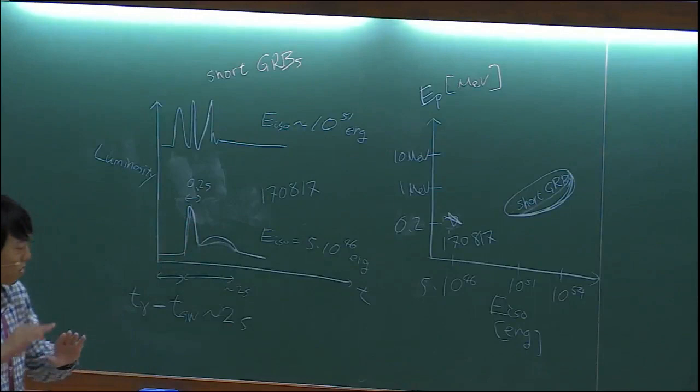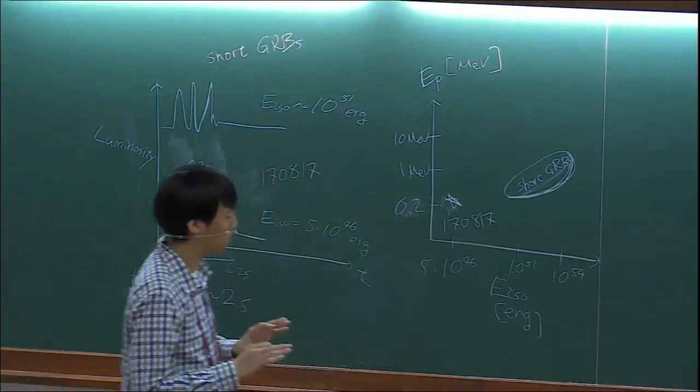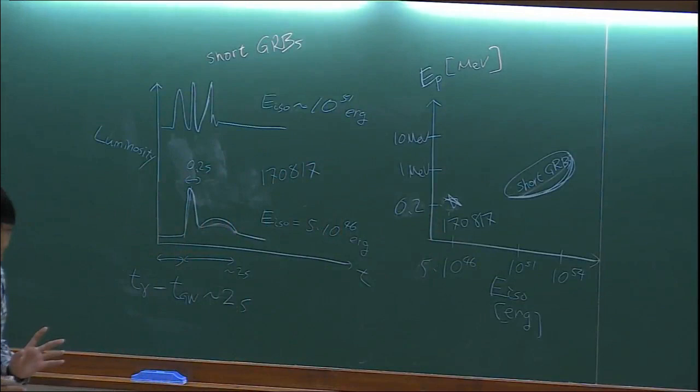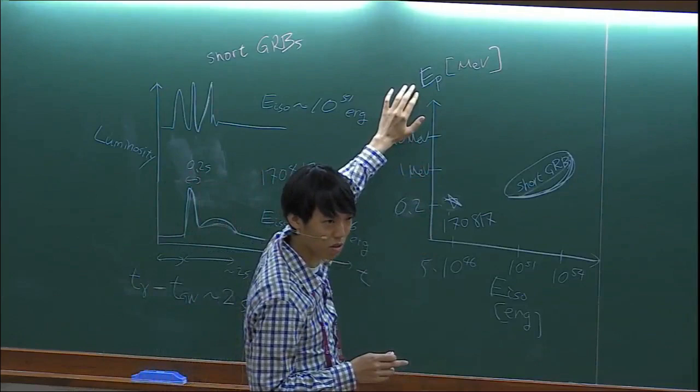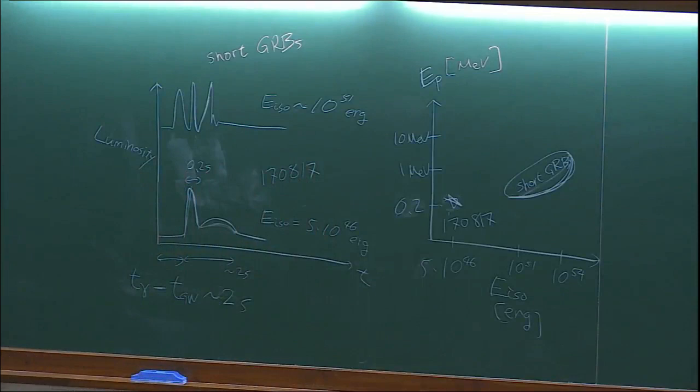If you look at the spectrum and try to fit where most of the photons are coming from, most of the energy in the initial spike has photon energy of about 200 keV. So this typical energy is not very different from normal short GRBs. But if you plot the peak energy of the photons versus total energy, you see a very big difference between the normal short GRB and this event.